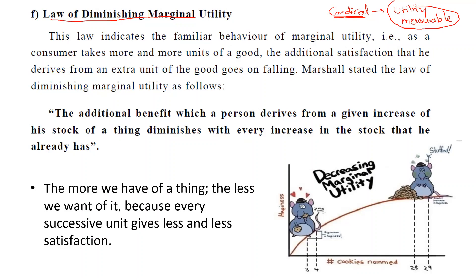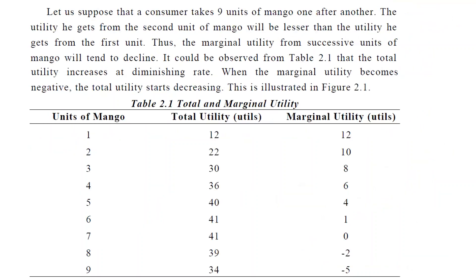Marshall stated the law as: the additional benefit which a person derives from a given increase in his stock of a thing diminishes with every increase in the stock that he already has. In simple words, the more we have of a thing, the less we want it, because every successive unit gives less and less satisfaction. For example, suppose a consumer takes nine units of mangoes one after another. From the first unit, total utility is 12; from the second unit, total utility is 22.